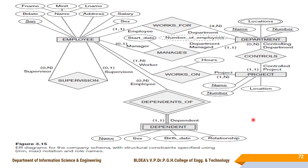This is the ER diagram for the company schema, with structural constraints specified using min and max. Employee is an entity type, Department is an entity type, Project is an entity type, and Dependent is an entity type represented with a double rectangle — indicating it is a weak entity type. Dependent has no key attribute; the dashed underline on its attribute indicates a partial key, not a full key attribute.